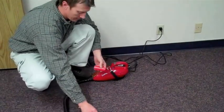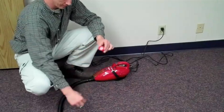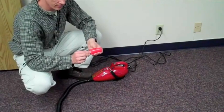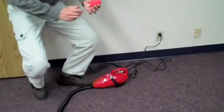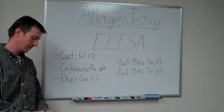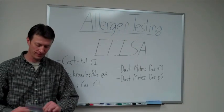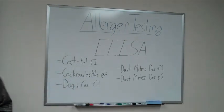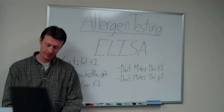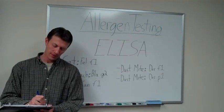Once the inspector is confident that he has collected a sufficient amount of dust, he will disconnect the cassette, place the protective caps back on, and prepare the sample for shipment to the lab. The sample will then be analyzed at a third-party laboratory. Based on the results of the analysis, a lab report will be generated outlining the presence and significance of the aforementioned allergens.